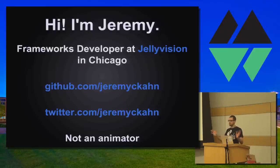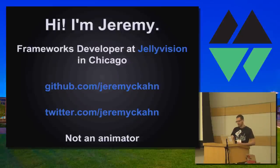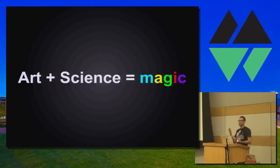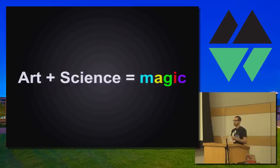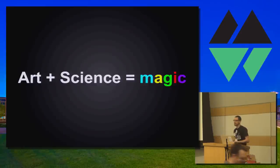So why am I here talking about animation, which is a creative thing? I think that at the intersection of art and science you get something really magical. When you get people who are really good at design together with people who are good at finding the science behind things, you get the best results. I like to focus on the engineering components and let the creatives focus on the art stuff.